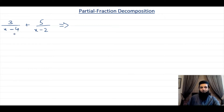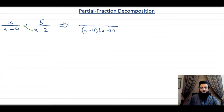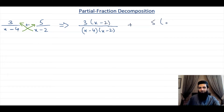In this case, the denominator is going to be (x minus 4) times (x minus 2). For the first fraction, we're going to multiply 3 with (x minus 2), and similarly for the second fraction, we'll multiply 5 with (x minus 4). So here we get 3 times (x minus 2), and in the second fraction we have 5 times (x minus 4) divided by (x minus 4)(x minus 2).